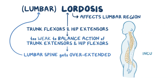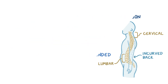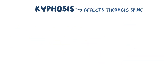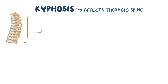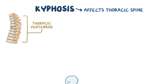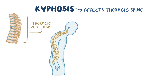Lordosis results in an incurved back in the cervical or lumbar spine. Kyphosis mainly affects the thoracic spine. It usually occurs when the front of the thoracic vertebrae gets deformed or crushed, causing this part of the spine to excessively bend forward. Kyphosis typically results in a rounded back in the thoracic spine, which looks like a hump in the upper back.